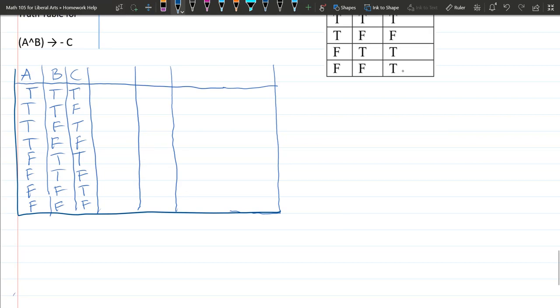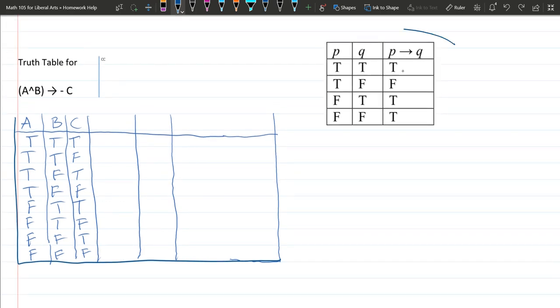We're going to do the truth table for A and B implies not C. We're going to need the implication truth table, which I have right here. This truth table I grabbed from the notes in chapter 4, right out of the textbook.